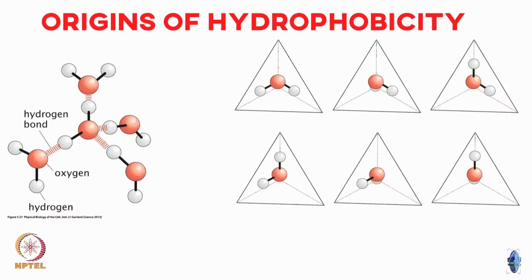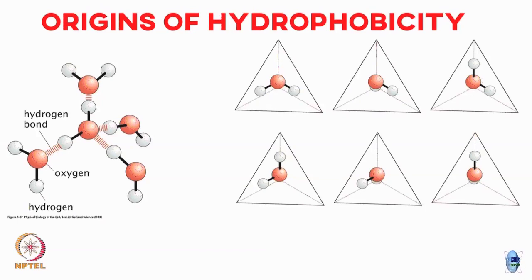Now let us say you replace a water molecule and place a molecule which does not like to form a hydrogen bond. If you replace at one vertex — say instead of a water molecule you place a non-polar molecule which does not like to form a hydrogen bond — then the configurations that require bonding at that vertex are no longer allowed. The central oxygen cannot form a hydrogen bond where there is no water. The configurations that bond to the remaining unchanged vertices are still fine.